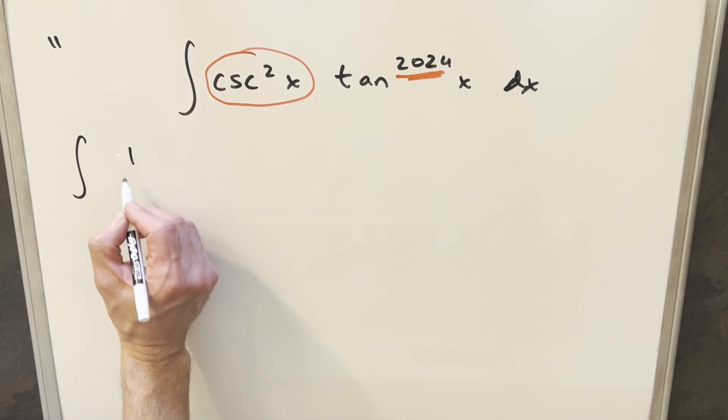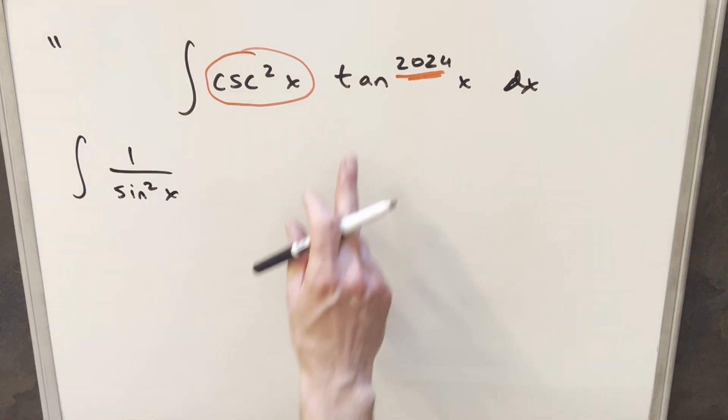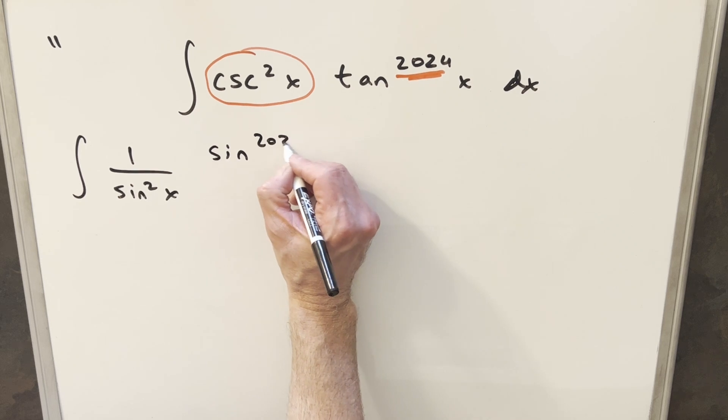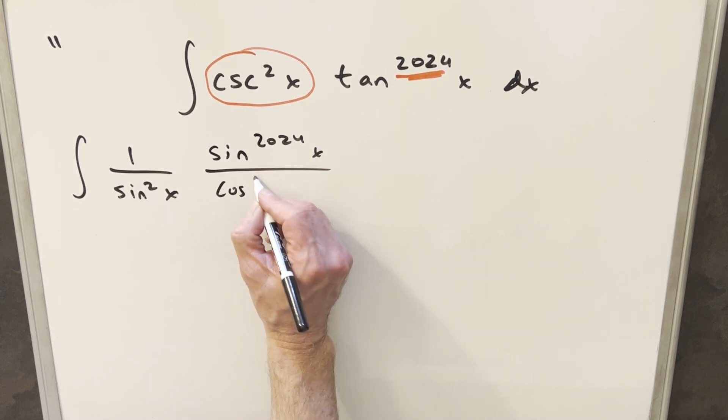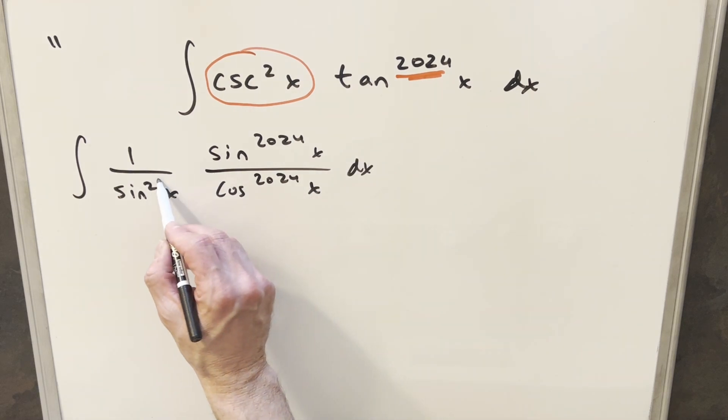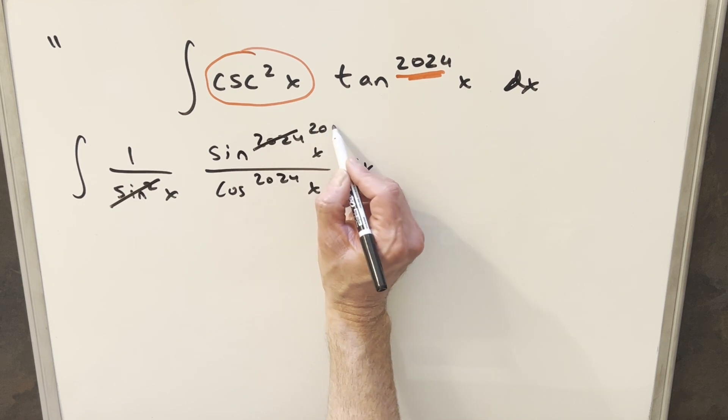Cosecant is 1 over sine, so I'll write this part as 1 over sine squared x. Tangent is sine over cosine, so I can write this as sine 2024 x over cosine 2024 x. And then from here what I'll do, I'm just going to cancel out. We get two sines here. I'll just cancel here and convert this into 2022.